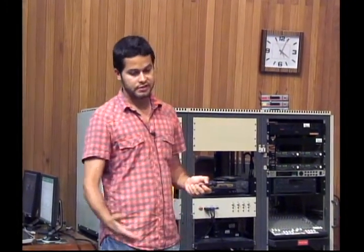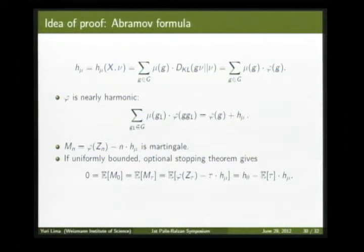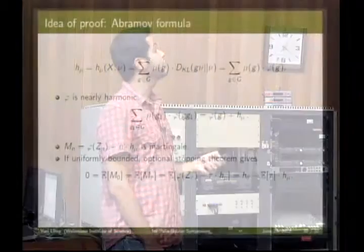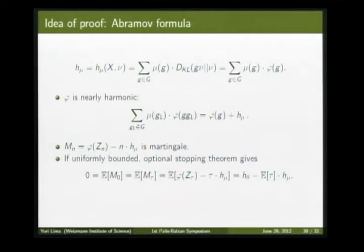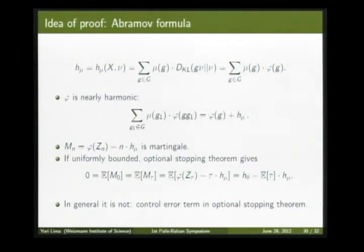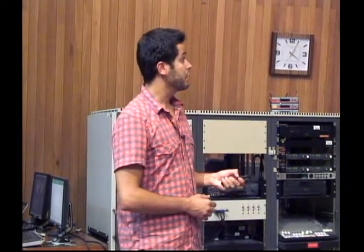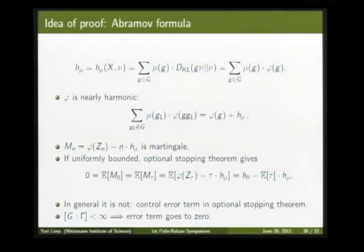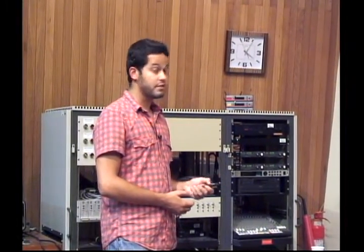In general, the martingale increments are not uniformly bounded — for instance if μ has full support. But we can analyze the error term in the optional stopping theorem. It gives an expression measuring how long you can avoid the trivial coset on the quotient space. Since the quotient space has a finite number of elements, we can apply the machinery of Markov chains to show this integral converges exponentially to zero. Therefore the error term in the optional stopping theorem is zero, and the theorem follows.